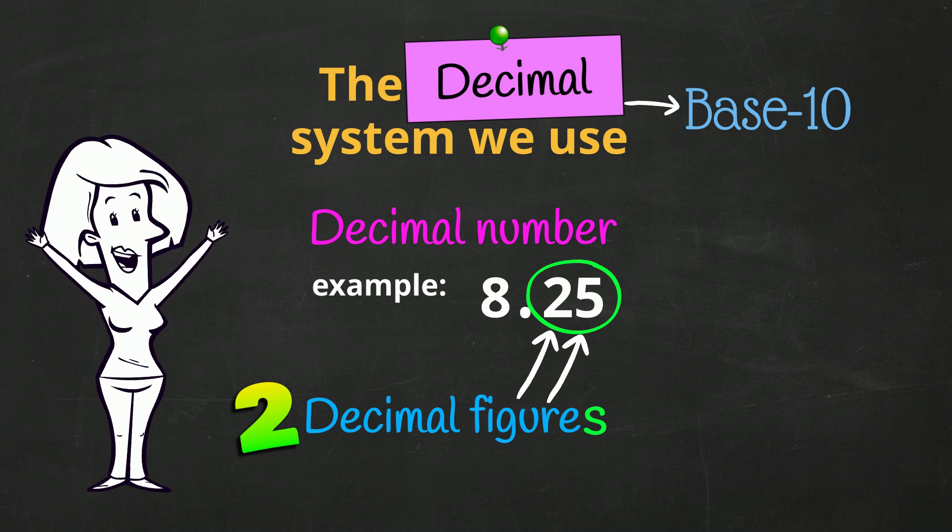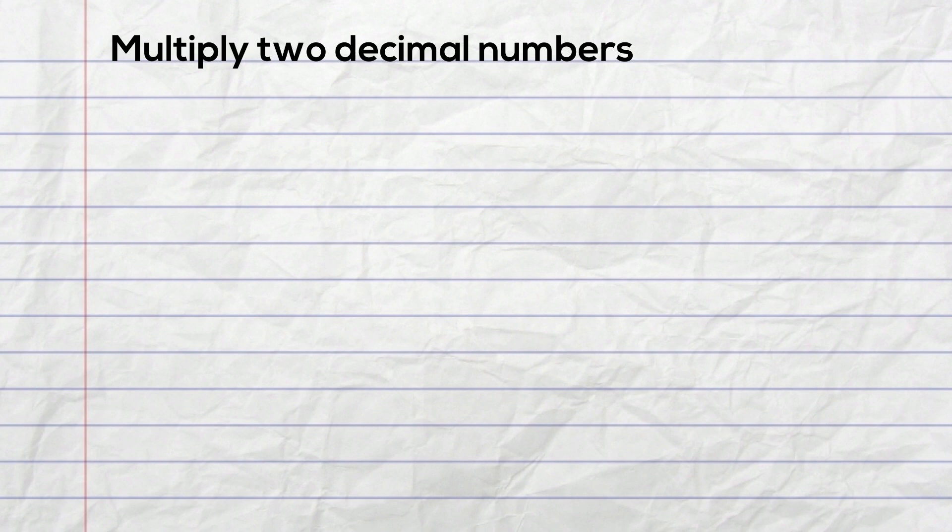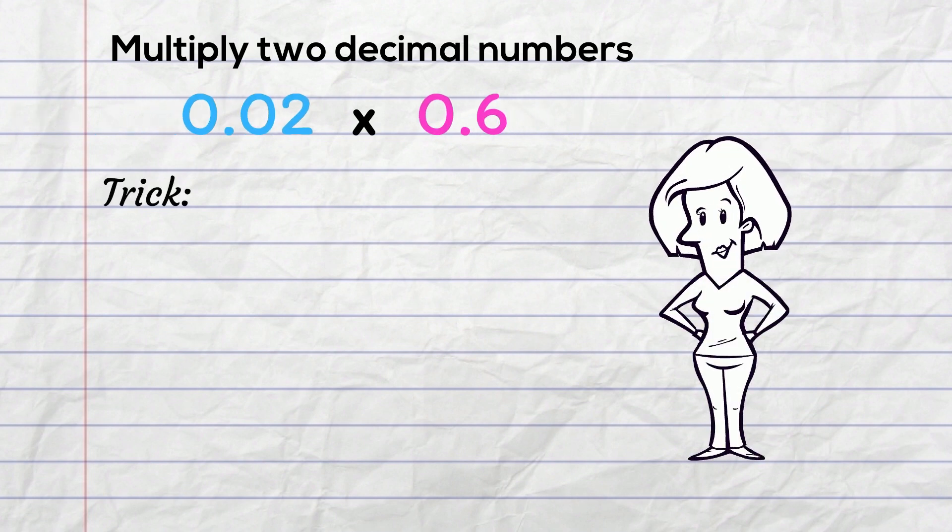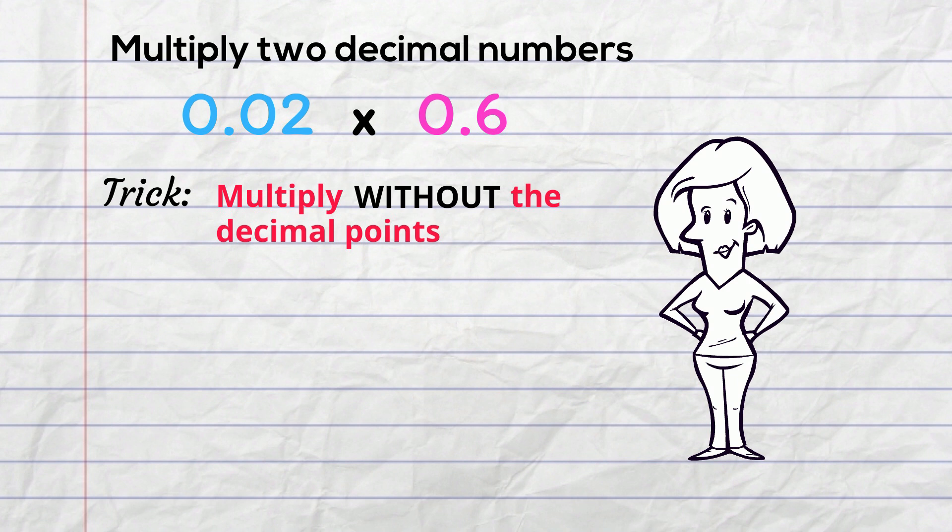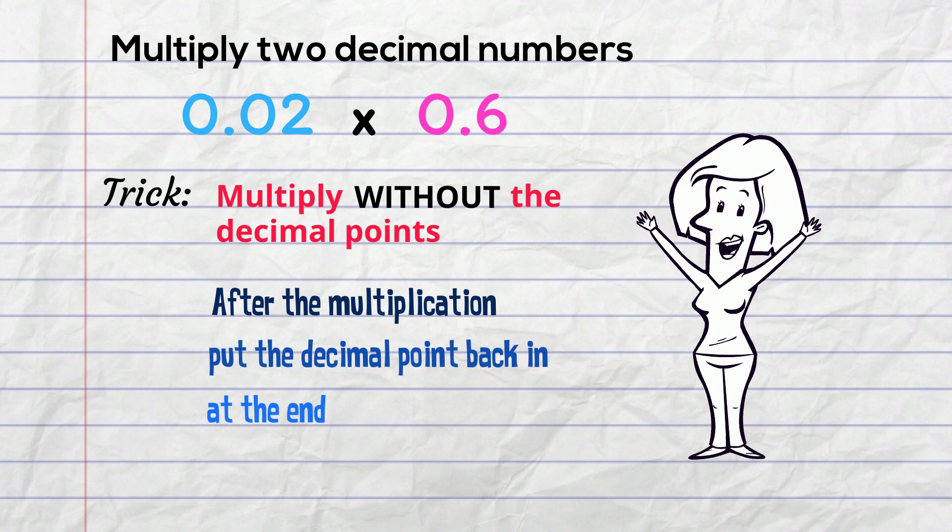Now let's get on to the new stuff! We're going to multiply 2 decimal numbers. Here they are! The trick is, we multiply without thinking about the decimal points. And then after we've done the multiplication, we put the decimal point back in at the end.